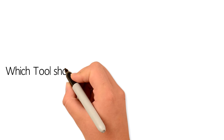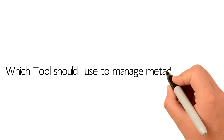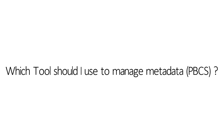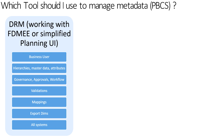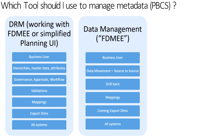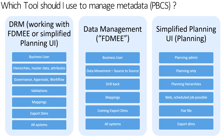If you're on the cloud using PBCS, or Planning and Budgeting Cloud Services, you can still use DRM on-premise to manage your hierarchies, and then use Data Management — which is essentially FDMEE — to pull in those hierarchies and upload them into your cloud application. You would have drill-back capabilities and the mapping capabilities available through the Data Management or FDMEE option. The other option is the Simplified Planning user interface, which is another way for planning admins to manage metadata and hierarchies for your cloud planning solution.